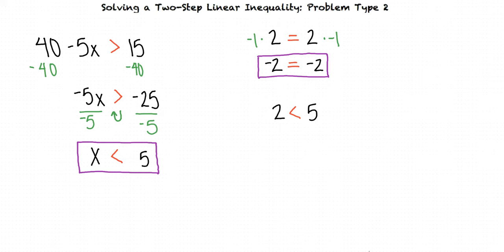However, if we multiply both sides of the inequality by negative 1 without flipping the inequality sign, we get negative 2 is less than negative 5.